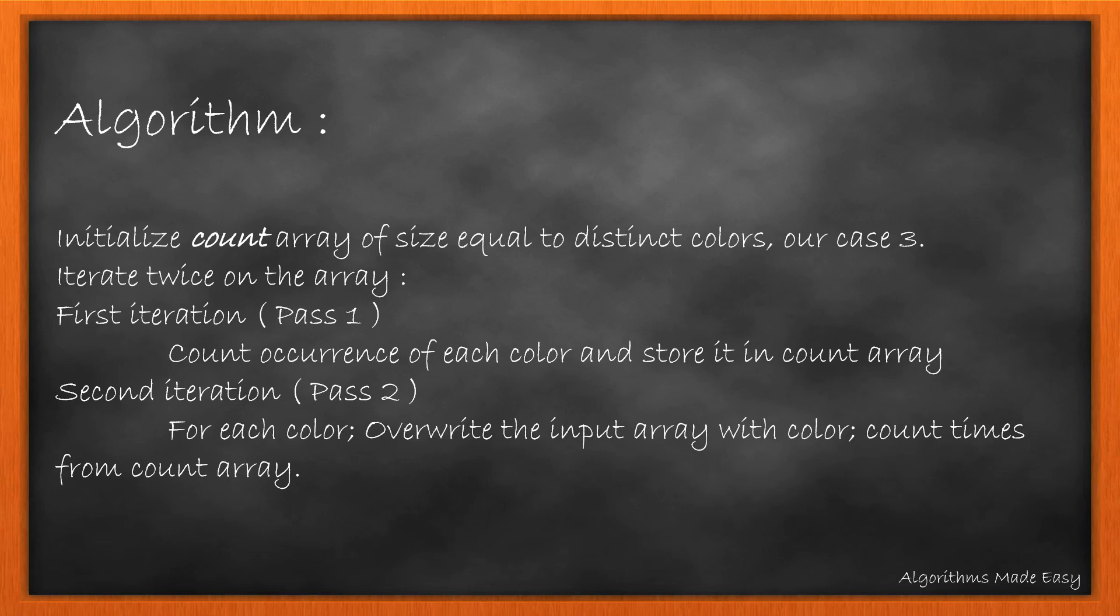We will then iterate over input array and store the count for each color at respective indexes. In second pass we will iterate over the count array for each color. We will override the input array with the color count times from the count array.